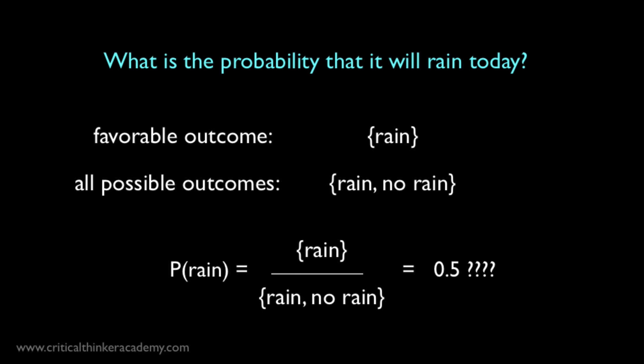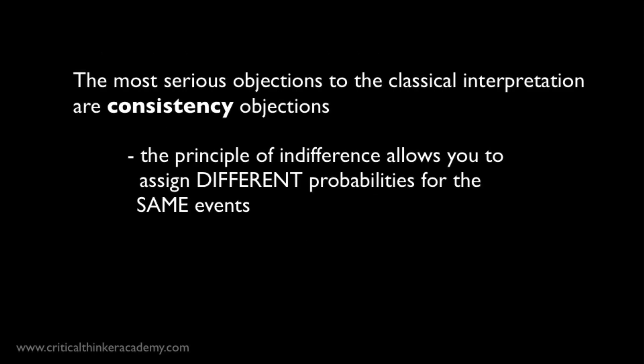This is an example of a situation where it's very hard to see how the necessary conditions for the use of the classical definition could apply and make intuitive sense of the question. In this case, it's not obvious how to define the set of alternative outcomes that are supposed to be equally possible. However, the most serious objections to the classical interpretation of probability are consistency objections. It seems that under this interpretation, it's possible to come up with contradictory probability assignments depending on how you describe the favorable outcomes relative to the space of possible outcomes. And the interpretation doesn't have the resources to resolve these contradictions without smuggling in other concepts of probability.